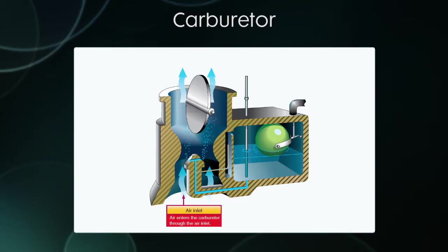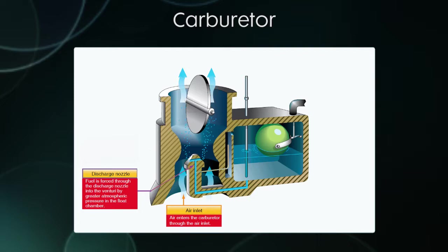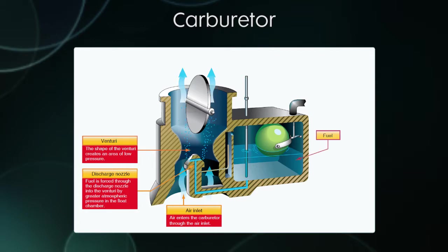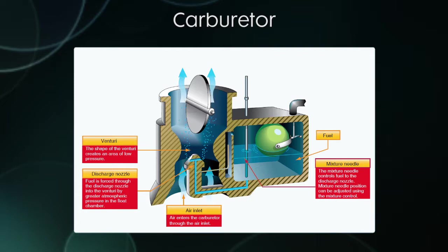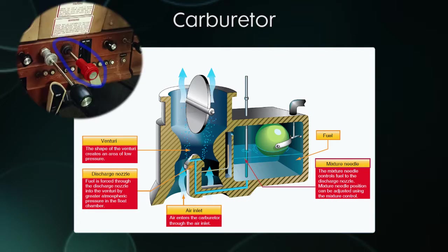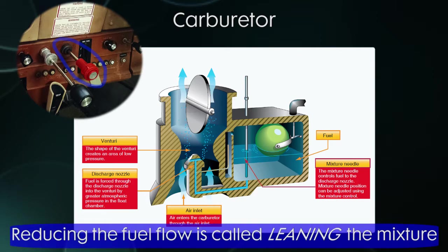We have an air inlet on the bottom where air enters the carburetor. We have a discharge nozzle where fuel gets added into the air mixture. There's a curved part inside the carburetor — that's a venturi tube — so there's low pressure inside, which creates suction that pulls the fuel into the air. We have fuel inside the chamber here, and there's a mixture needle controlled by your mixture control, the red knob inside the cockpit. You're essentially plugging the hole at the bottom to either let more or less fuel in. As you go up in altitude, there's less air density, so you'll decrease the amount of fuel to keep the fuel and air mixture the same.